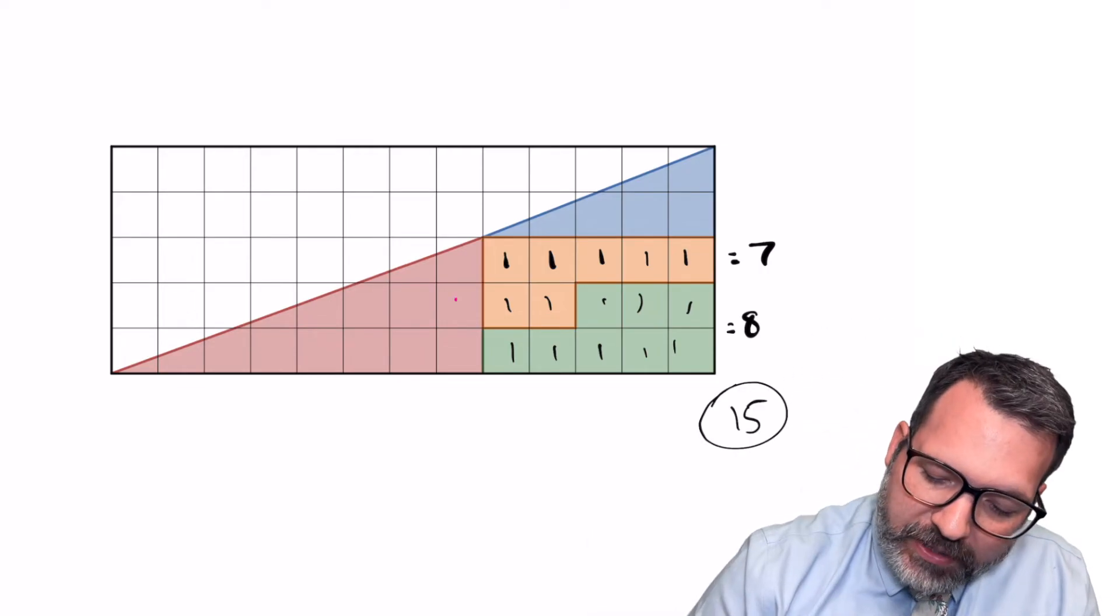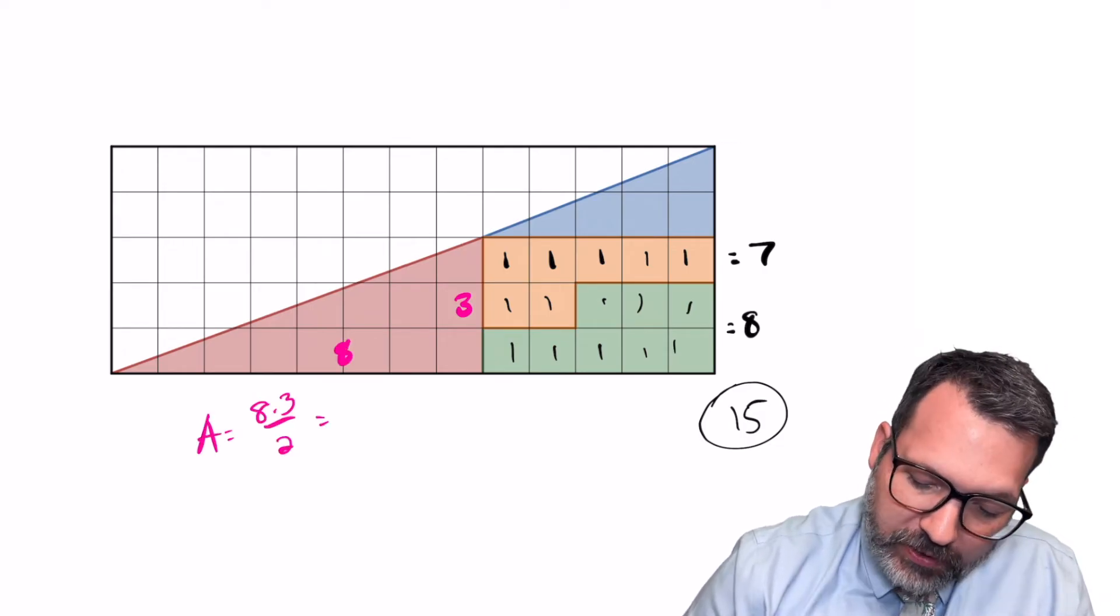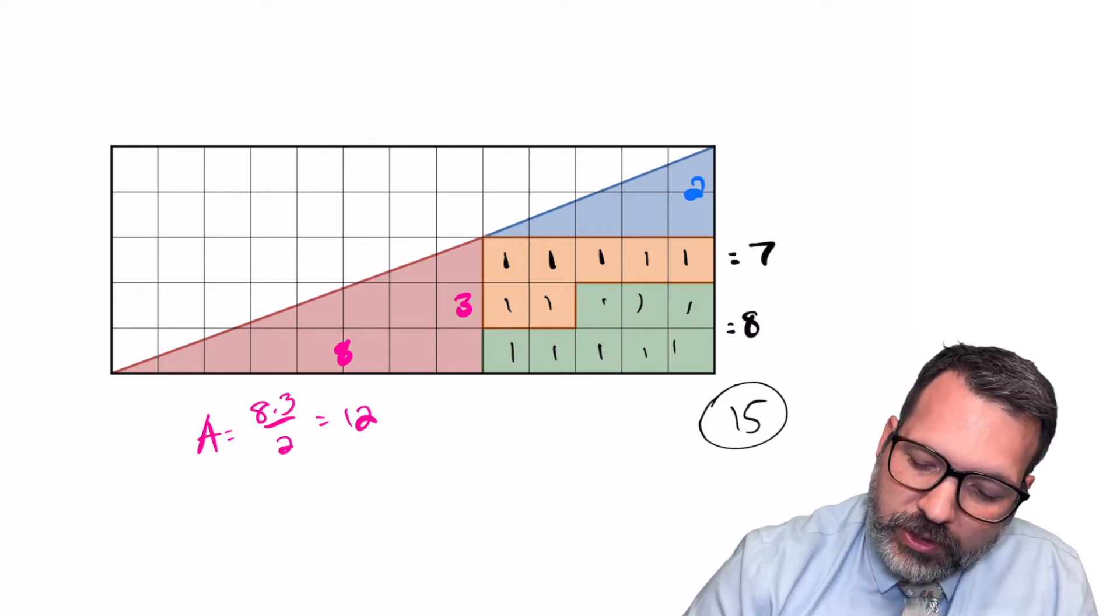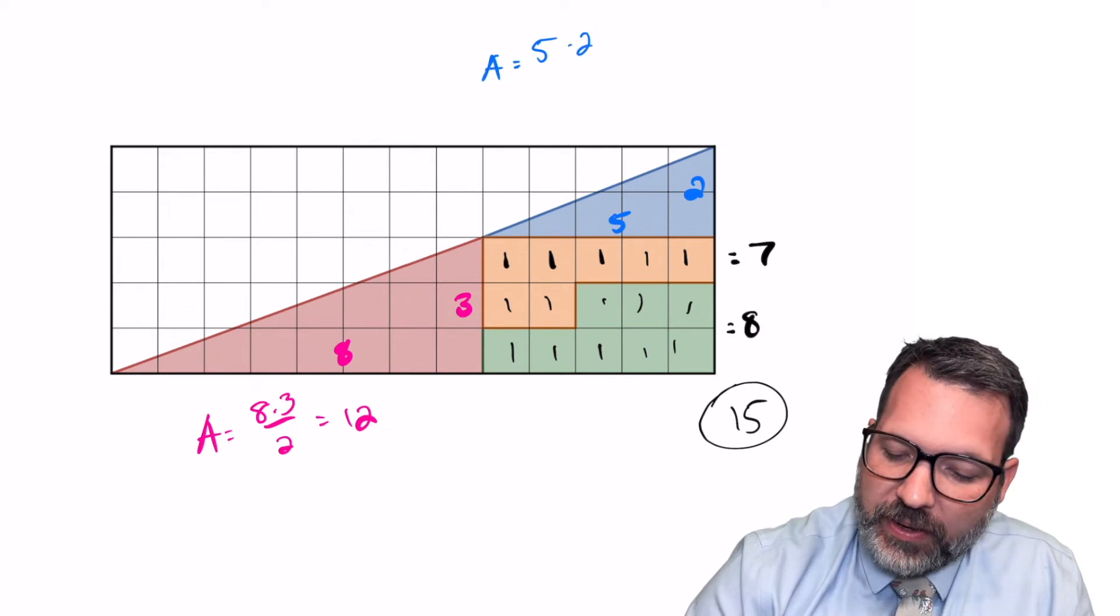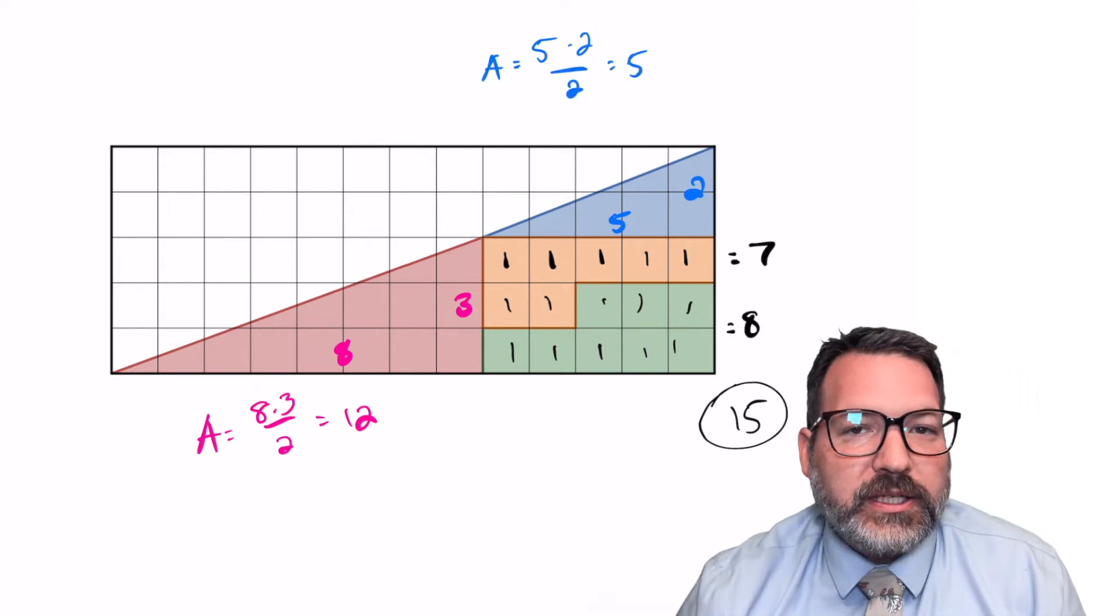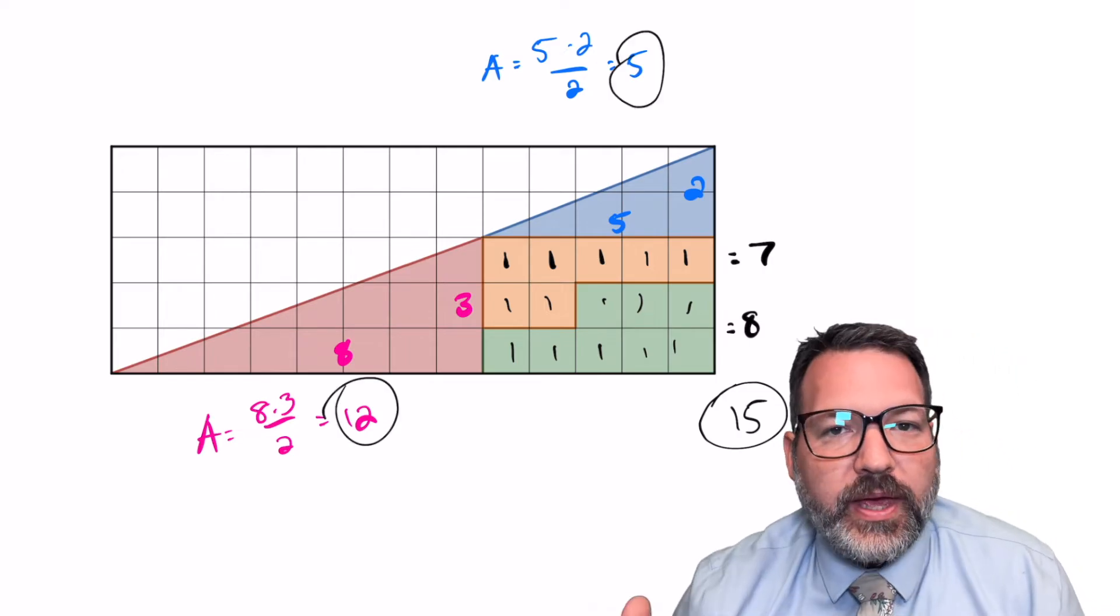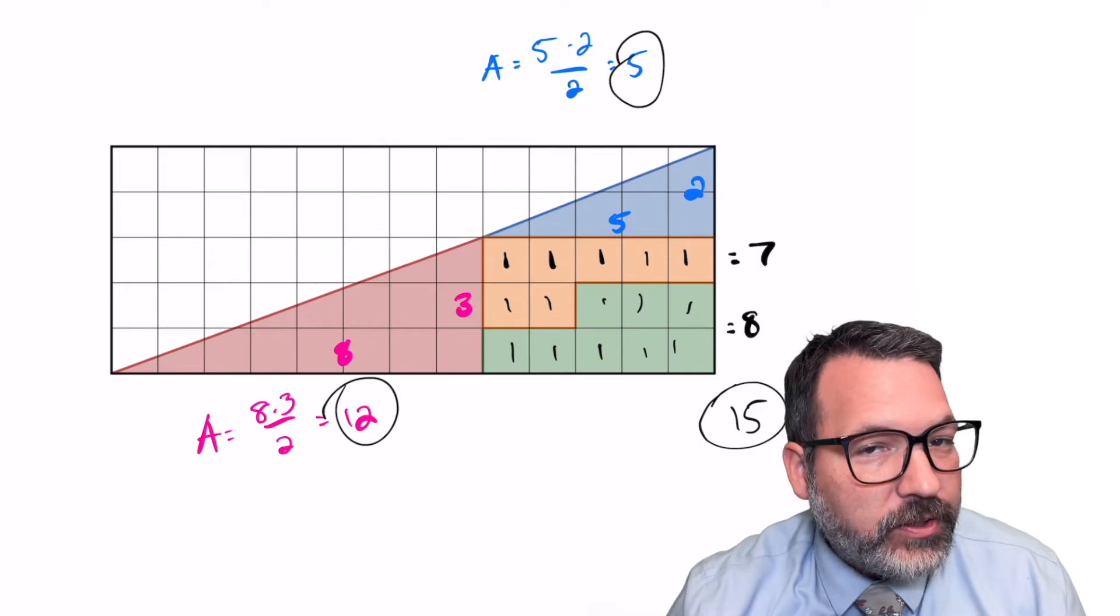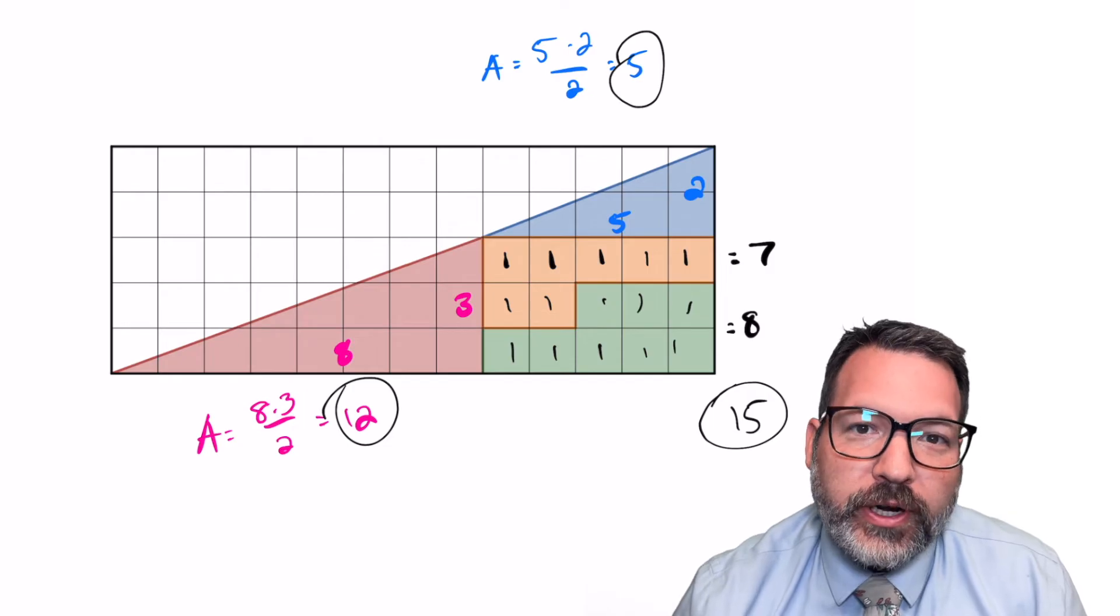This red triangle has a height of 3 and a base of 8, and so its area would be 8 times 3 divided by 2, that makes 12. And then the blue triangle, 2 units tall by 5 units long, that would be an area of 5 times 2 divided by 2 makes 5. And you'll notice something a little weird at this point. If we add up all of these areas, we don't get 32.5, we also don't get 31.5. Instead, we get a number right in between those two, 32.